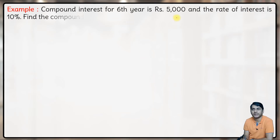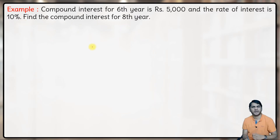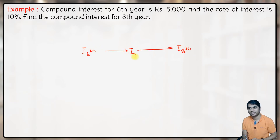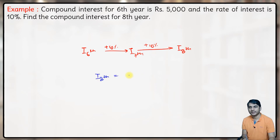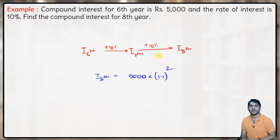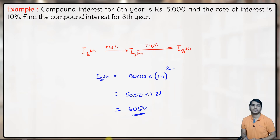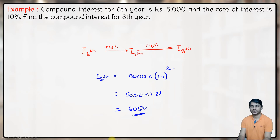Next example: Compound interest for the 6th year is 5000 and the rate of interest is 10%. Find the compound interest for the 8th year. We need to go from the 6th year to the 8th year — that's 2 steps. So interest for the 8th year = 5000 × (1.1)² = 5000 × 1.21 = 6050. The answer is 6050 — this is the interest for the 8th year only, not the total interest for 8 years.